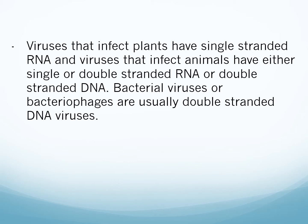Viruses that infect plants have single-stranded RNA, and viruses that infect animals have either single or double-stranded RNA or double-stranded DNA. Bacterial viruses, or bacteriophages, are usually double-stranded DNA viruses. So plant viruses generally have single-stranded RNA, animal viruses have either single or double-stranded RNA or double-stranded DNA.